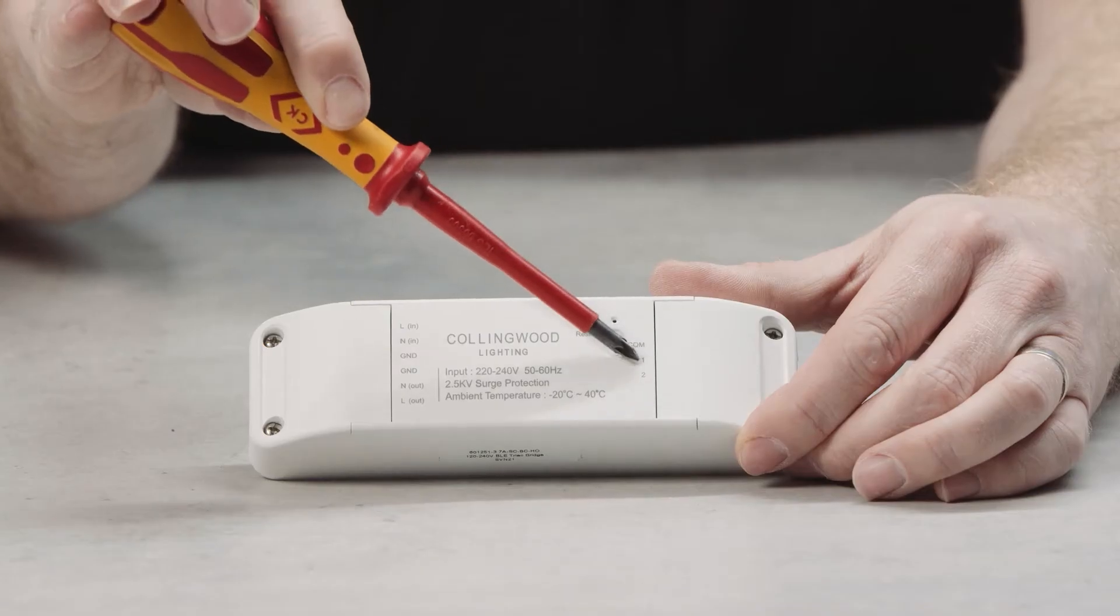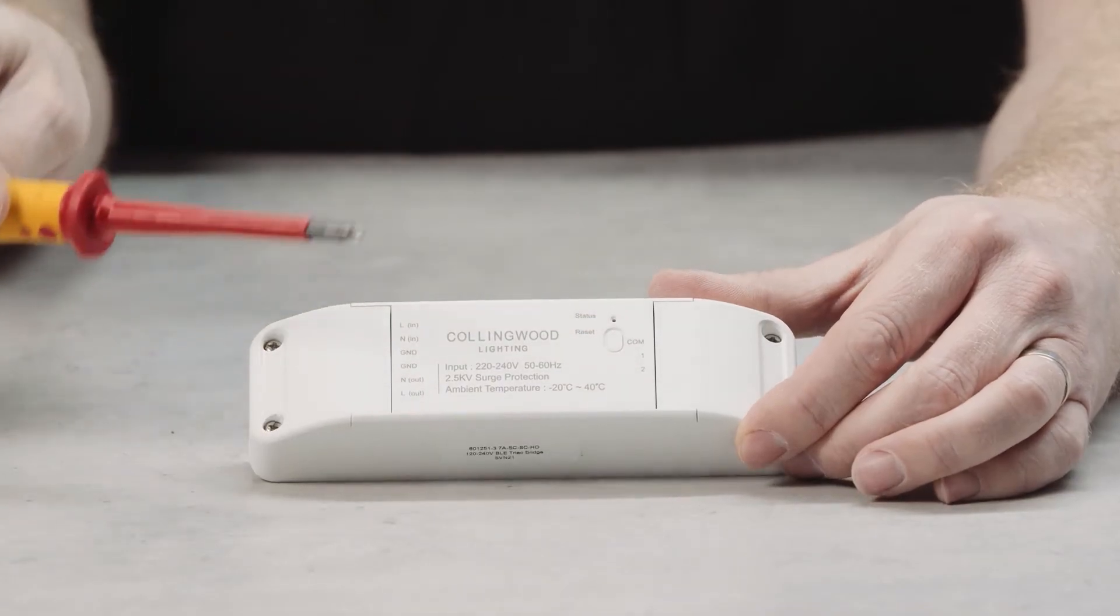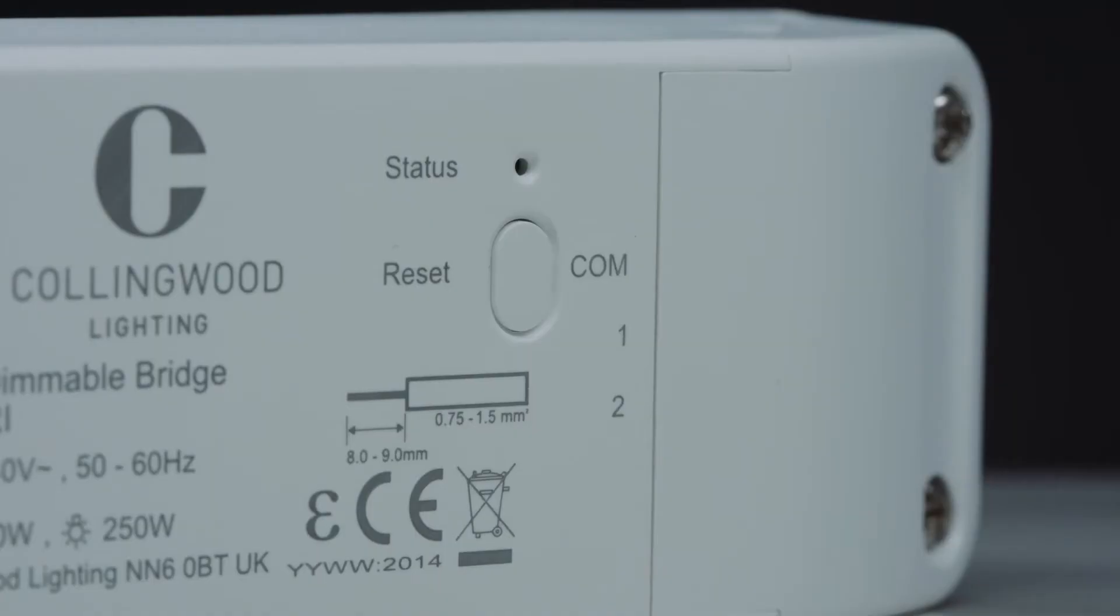If using a circuit with a retractive switch, use the terminals under the right hand side cover, labelled with COM, 1 and 2.